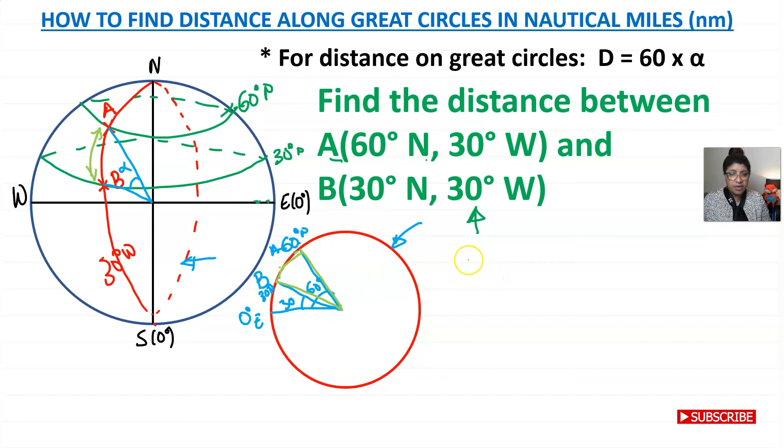So for this sector, if I take this out, that's the center of the earth. That's B. That's A. This angle is this one here, which is going to be 30 degrees. This is the distance that you need. So alpha is equal to 60 degrees, take away 30 degrees, which is equal to 30 degrees.